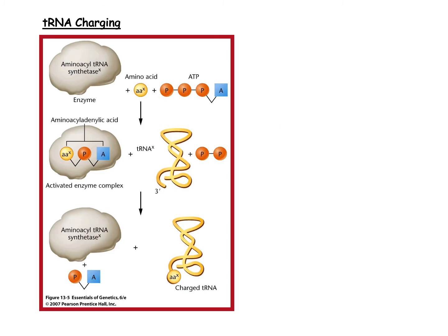The tRNAs are also recyclable. Every tRNA that has donated an amino acid can be utilized to participate in protein synthesis once again, simply with the addition of another amino acid. There are a family of enzymes referred to as aminoacyl-tRNA synthetases — in fact 20 distinct enzymes, one for each of the 20 amino acids. The substrates for these enzymes are the tRNA as well as the correct amino acid that needs to be covalently linked to it, allowing the tRNA to go participate in protein synthesis all over again.